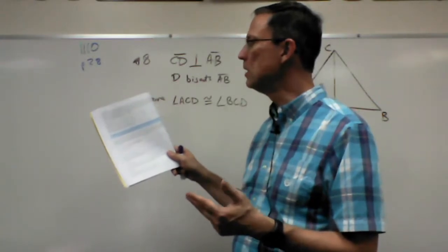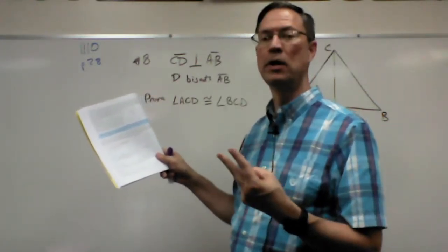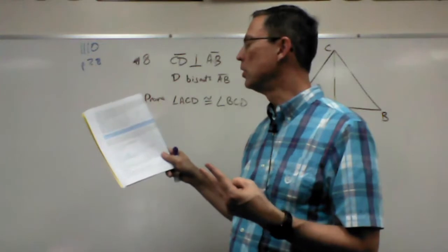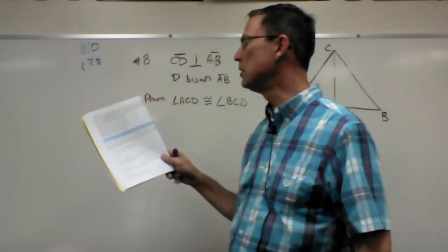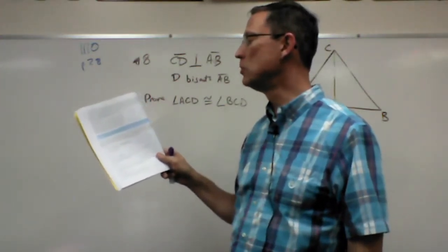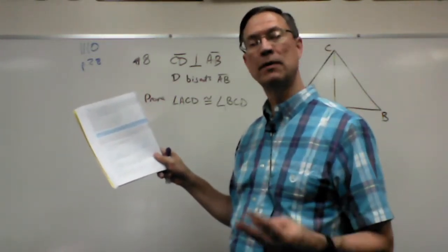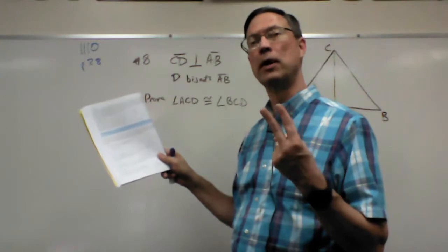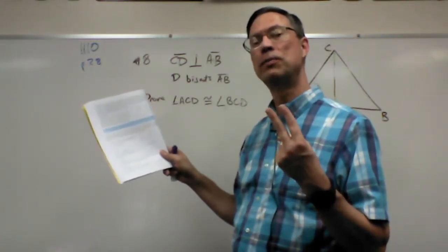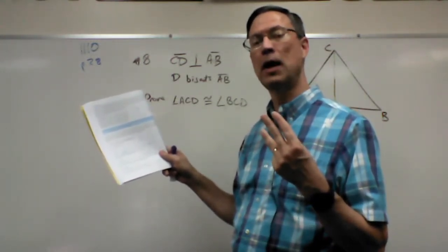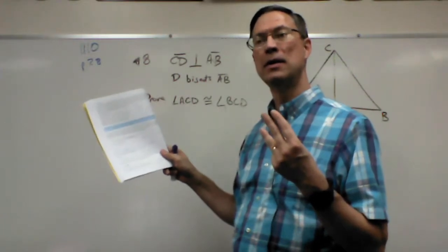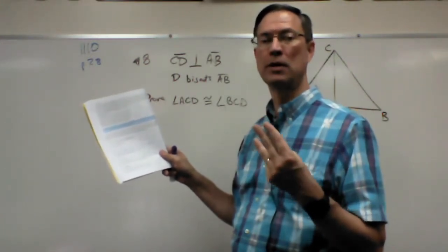Notice the theorem says if two legs of one right triangle are congruent to two legs of another right triangle, then the two triangles are congruent. And that's the LL theorem. So instead of having three letters, we only have two letters, but there is a third piece of information that's kind of implied.